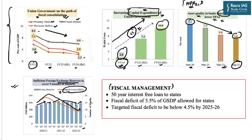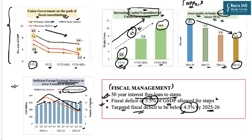The budget has also provided important fiscal management figures. The central government has pledged to provide a 50-year interest-free loan to state governments. A fiscal deficit of 3.5% of Gross State Domestic Product is allowed for the states. For overall fiscal deficit, the government is targeting to bring it below 4.5% by 2025-26. Despite the setback caused by the COVID pandemic, the government is working to reduce fiscal deficit to below 4.5% by financial year 2025-26. These are key facts to remember.